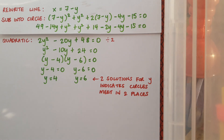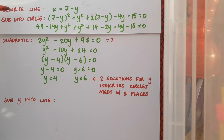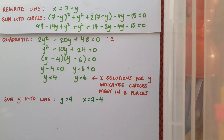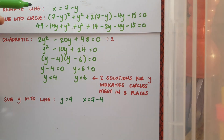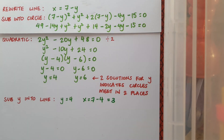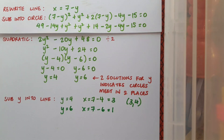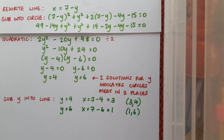I have the y values, but I need the x part of each point too. I'll substitute y back into x = 7 - y. When y = 4, x = 7 - 4 = 3, giving the point (3, 4). When y = 6, x = 7 - 6 = 1, giving the point (1, 6). Remember that x always goes first in the point. So the two points of intersection are (3, 4) and (1, 6).